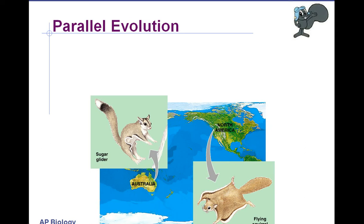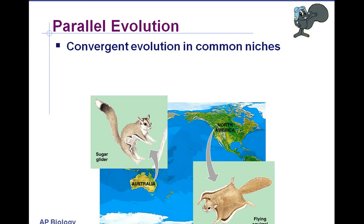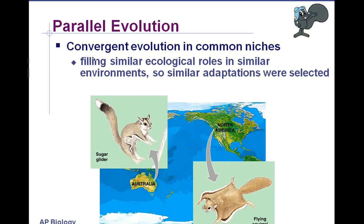However, homologous structures do not have to have the same function. In parallel evolution, we have convergent evolution in common areas — common biomes and common environments.